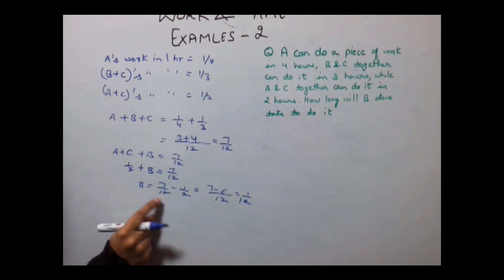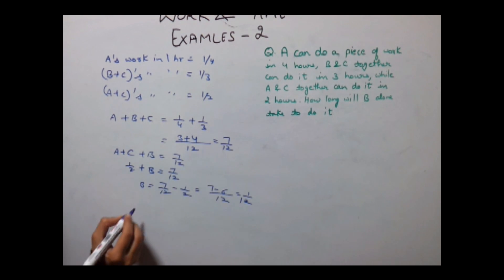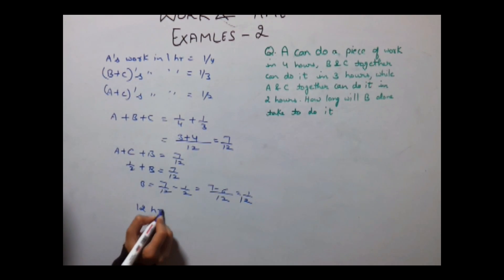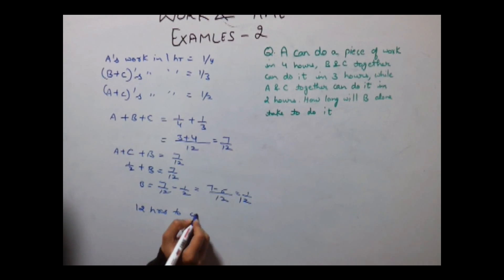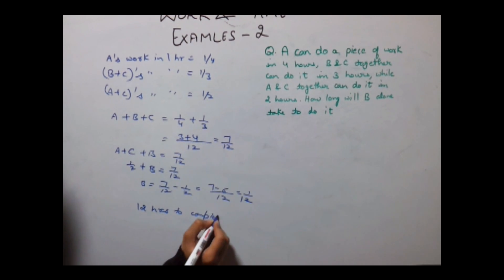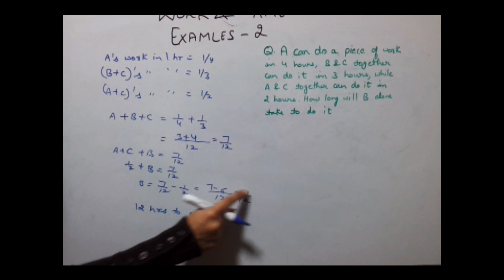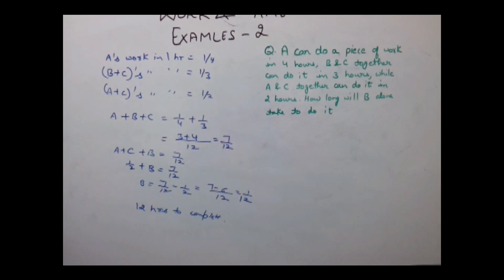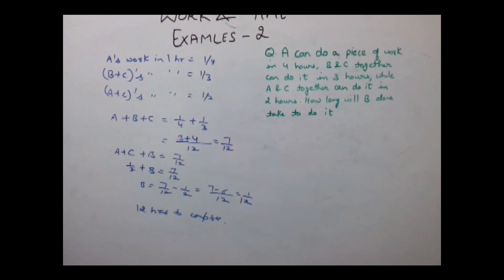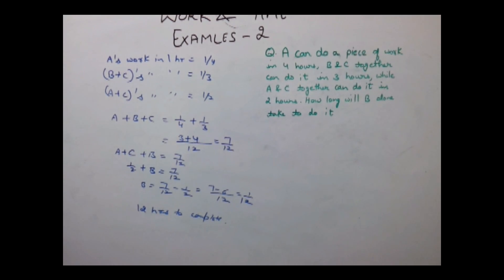Now B can do in 1 hour is 1/12. So he will take 12 hours to complete the work. Note we have reciprocated it because this is the total work taken by B to complete the work. For more examples stay tuned with IndiaEDU.com